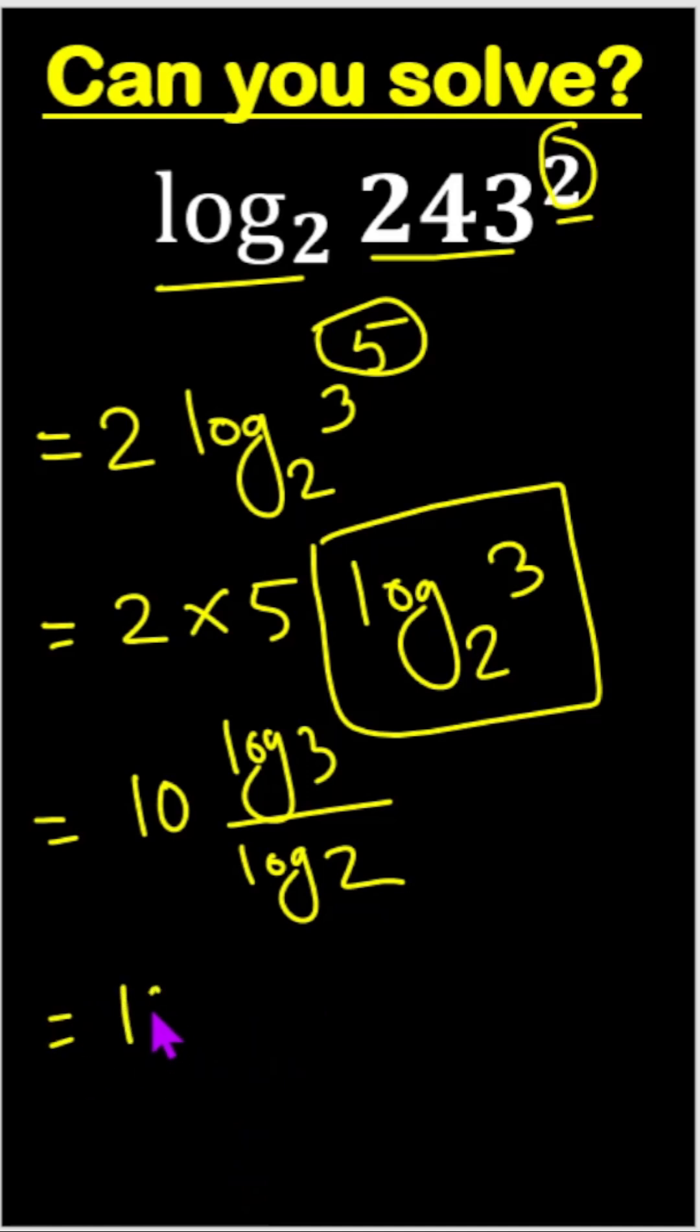So, 10 times this one, after calculation, we will get what? 0.477 divide 0.301.